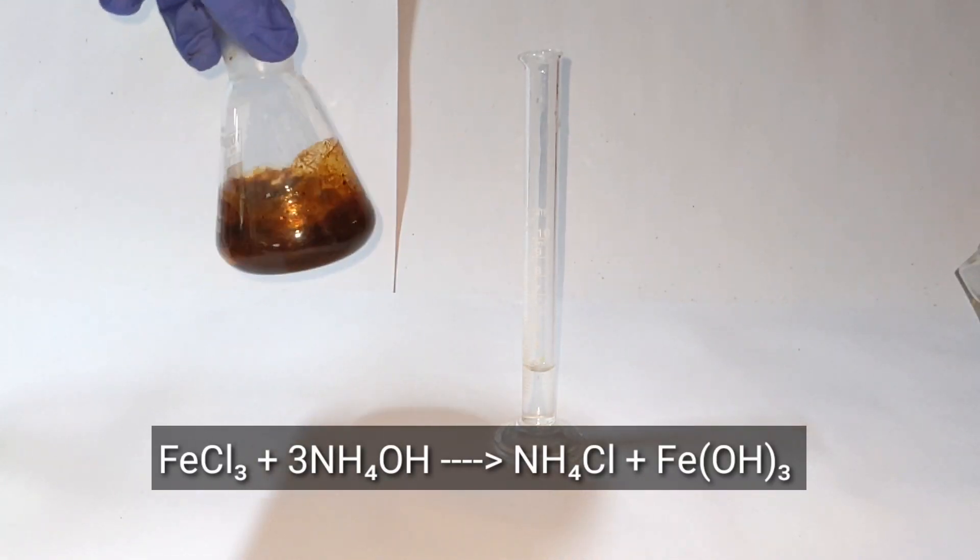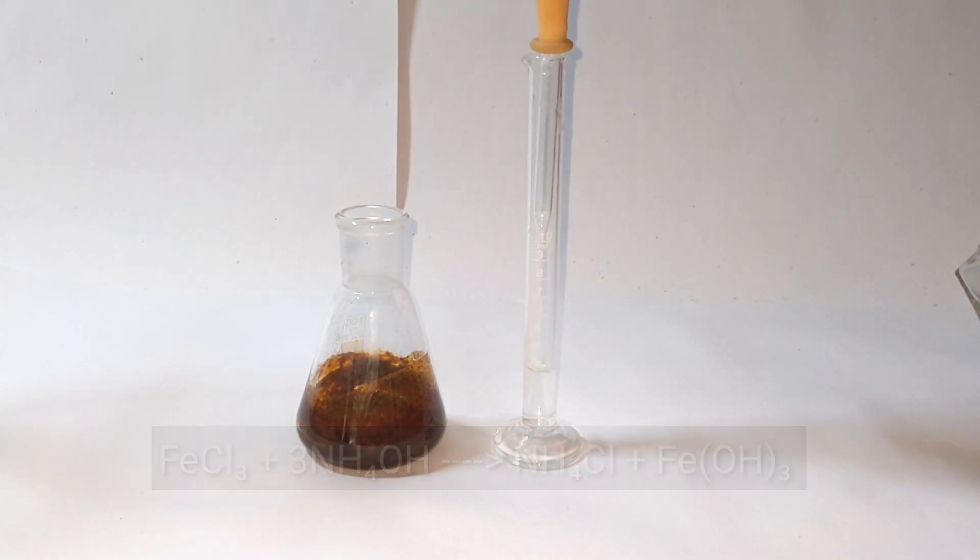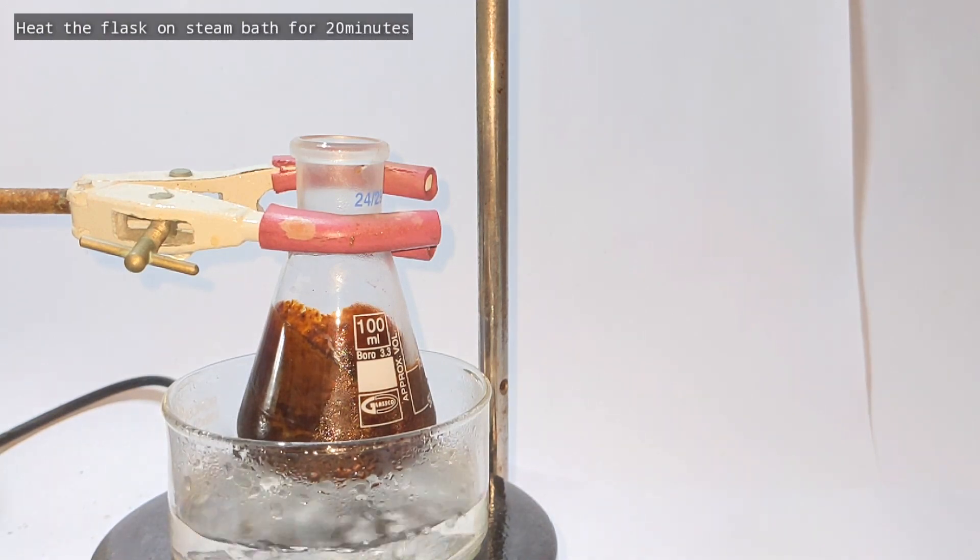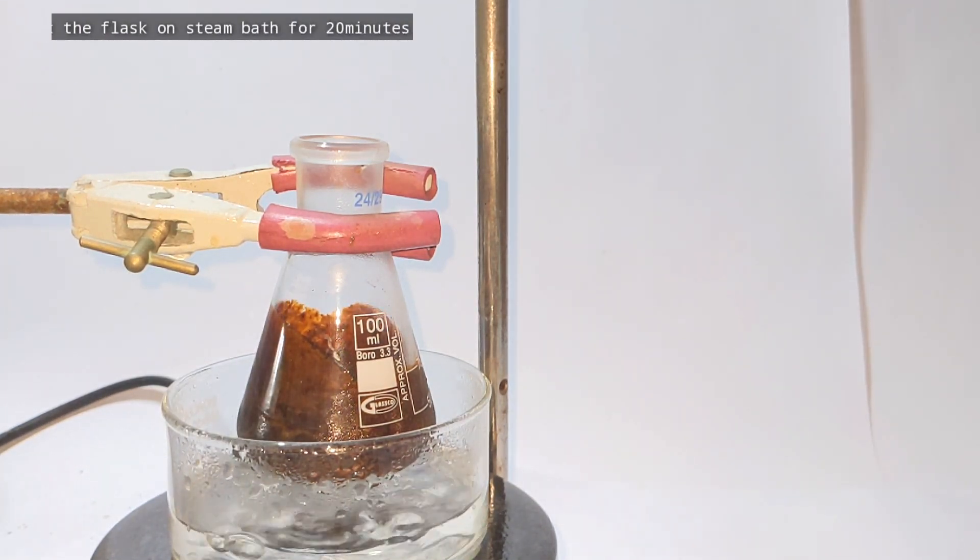Ammonia reacts with iron(III) chloride to form iron(III) hydroxide, which is the precipitate. Iron(III) hydroxide is also called ferric hydroxide. The flask was then placed in a steam bath for approximately 20 minutes in order to ensure the complete precipitation of iron(III) hydroxide.